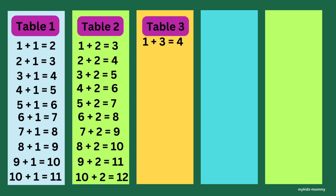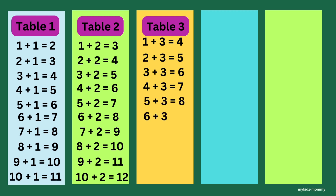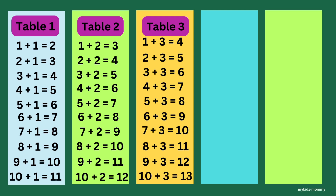1 plus 3 is 4. 2 plus 3 is 5. 3 plus 3 is 6. 4 plus 3 is 7. 5 plus 3 is 8. 6 plus 3 is 9. 7 plus 3 is 10. 8 plus 3 is 11. 9 plus 3 is 12. 10 plus 3 is 13. Awesome job kiddos! You guys know about Table 1, Table 2, Table 3. Let's see the other 2 tables in this page, which are Table 4 and Table 5.